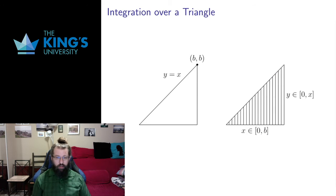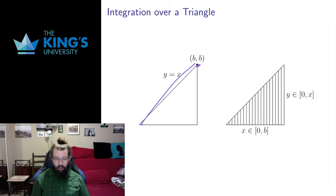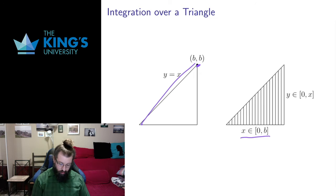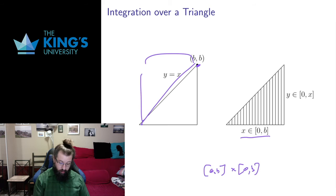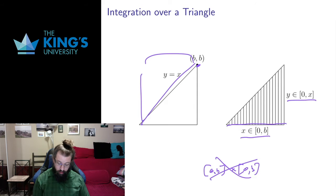How do I integrate over a triangle? I'll take the lower triangle — the triangle below the line y equals x, going up to the point (b, b) in R2. The way I do this is with variable bounds. I can take constant bounds in x from 0 to b. If I used constant bounds in both — 0 to b times 0 to b — then I'd get the whole square, but I don't want the whole square. So for the bounds in y, I'm going to start at 0 but stop when I get to the line y equals x, which bounds this triangle.